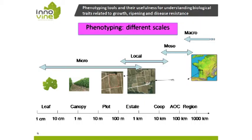Phenotyping can be done at very different scales: starting from the cell, the organ such as the leaf, the canopy, the plot, the estate, and the AOC — so micro, local, meso, and macro scales. I will concentrate mainly on phenotyping of vegetative development of a berry and some slides on disease incidence monitoring. I will not talk about rootstock phenotyping — rootstock is very important but often neglected, and there is much less done on rootstock phenotyping; it's even more complicated than phenotyping the aerial system.